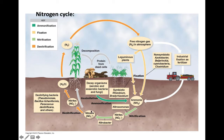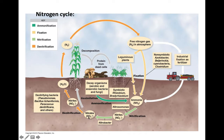The process that we wouldn't want as farmers is the third stage called denitrification. This occurs when the soil becomes anaerobic, forcing some bacteria to switch over to anaerobic respiration using nitrates as an alternate terminal electron acceptor. In denitrification, the bacteria take the usable form of nitrogen — nitrates — and convert it all the way back to the unusable form, molecular nitrogen. So denitrification is a loss of usable nitrogen, and as farmers, we don't want this to happen.